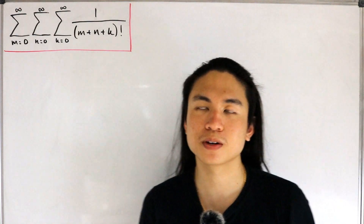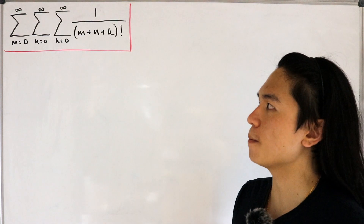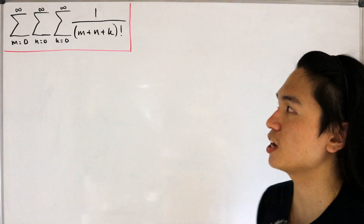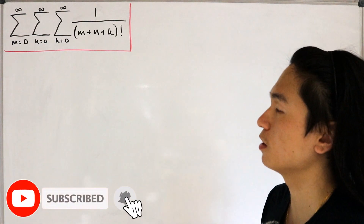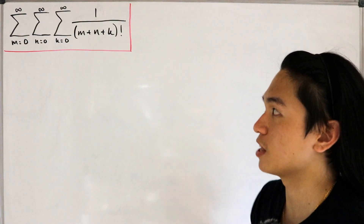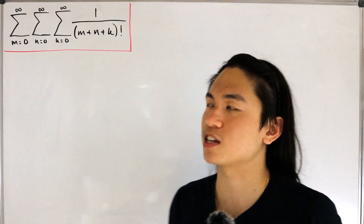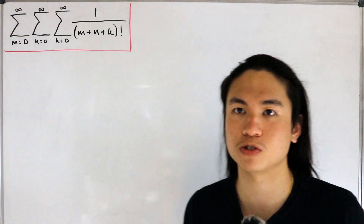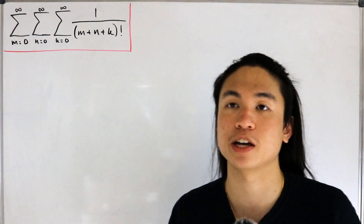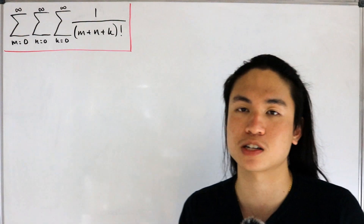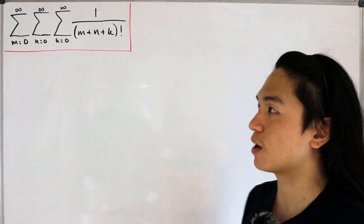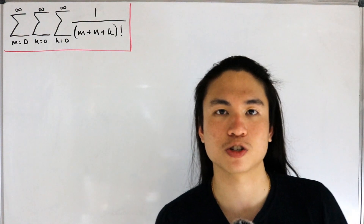We have a triple infinite sum for m, n, and k both equal to zero ranging all the way to infinity of one divided by (m+n+k) factorial. A triple sum like this probably may leave you stumped, but if you do a rewriting of the indices — that's the first step — it can be a little confusing at first glance. Afterwards we'll have a combination of one infinite sum and some finite sums, which makes the evaluation nice.